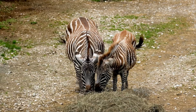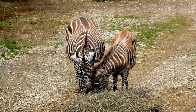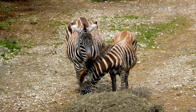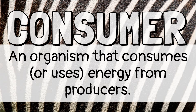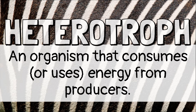When the zebra eats the grass, the energy passes to the zebra. The zebra is called a consumer because it consumes or uses energy from producers. Consumers are also called heterotrophs, or other feeders, because they can't make their own food.